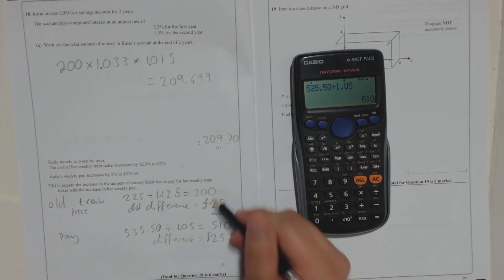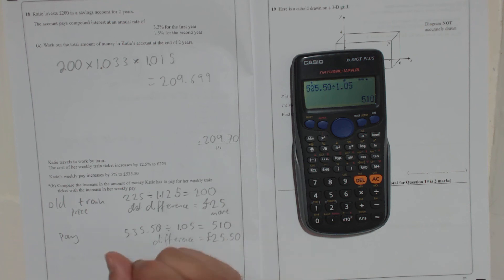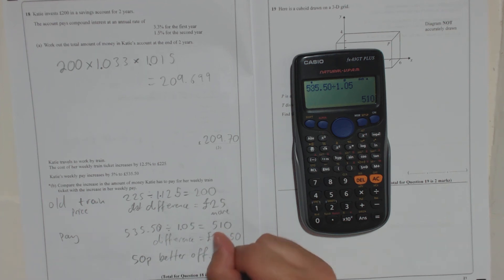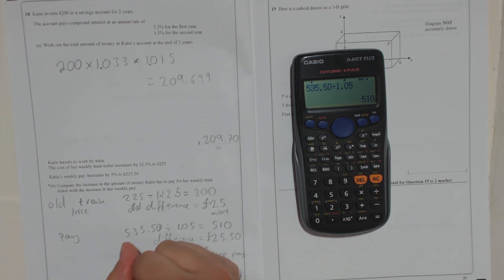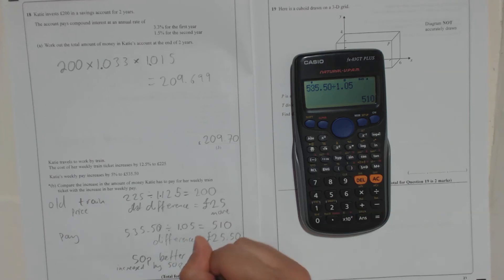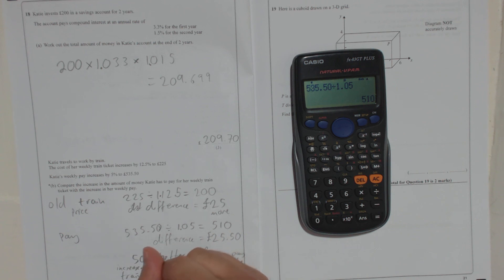So her pay went up by 25 pound 50. The ticket price of the train went up by 25 pounds. So after that, she is 50 pence. She is 50 pence better off since pay increased by 50 pence more than the train ticket.